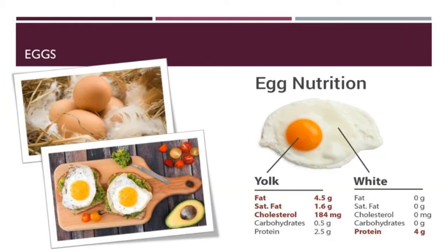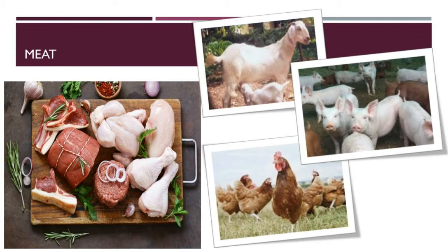The next animal product is eggs. Eggs are laid by female birds of many different species such as hen, duck, turkey, and ostrich. They are used in our daily diet to get energy and good health. Eggs are highly nutritious and rich in protein - each egg has 6 grams of high quality protein. A protein-packed breakfast helps to sustain mental and physical energy throughout the day. Consuming an egg daily is good for people of any age.